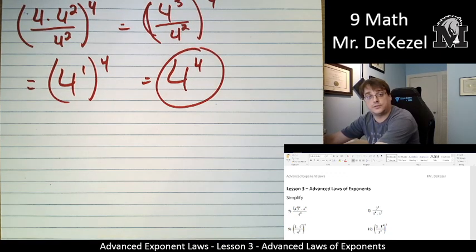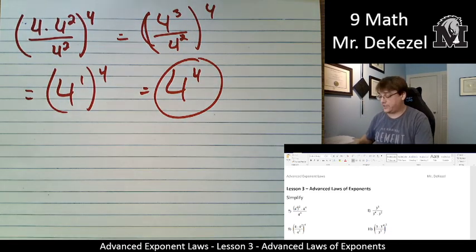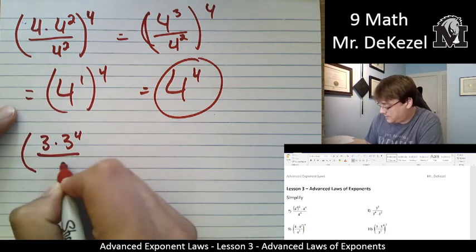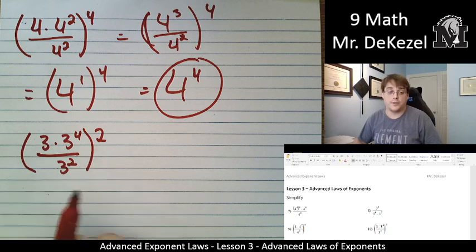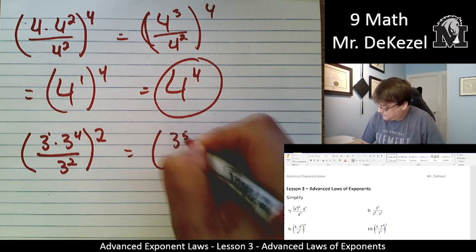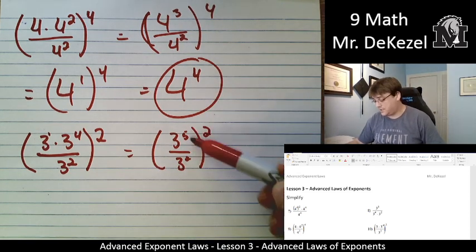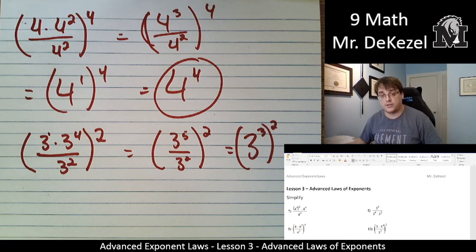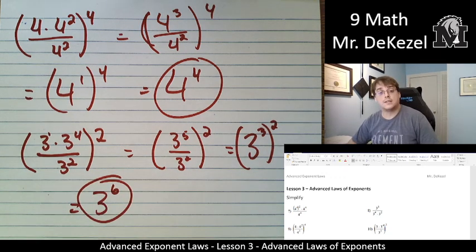Let's do the next one: three times three to the power of four, divided by three squared, all squared. We're going to do what's in the brackets first, top and bottom separately. One plus four is five. We subtract what we have: five minus two, so that is three to the power of three. We still have the squared outside, and then we multiply when it's a power of a power, which gives us three to the power of six.